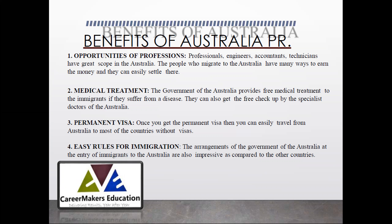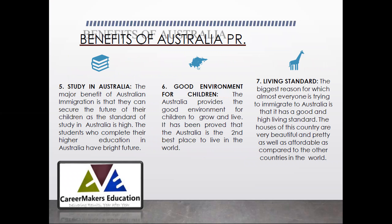The migration rules are very simple — they are not too complex. They are based on five or six fundamental parameters, so if you believe you can get those points, there are greater chances of you being able to travel to Australia. Another advantage of migrating to Australia is that the education level and education system is one of the best in the world.